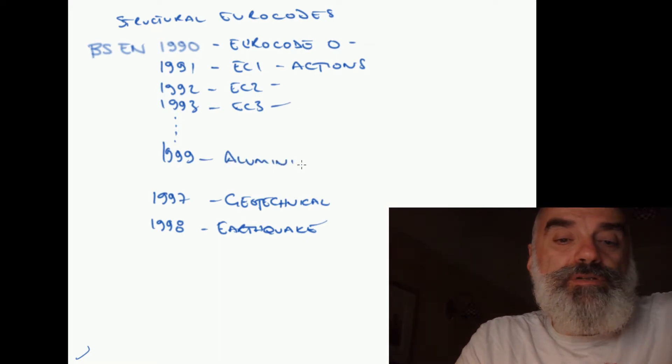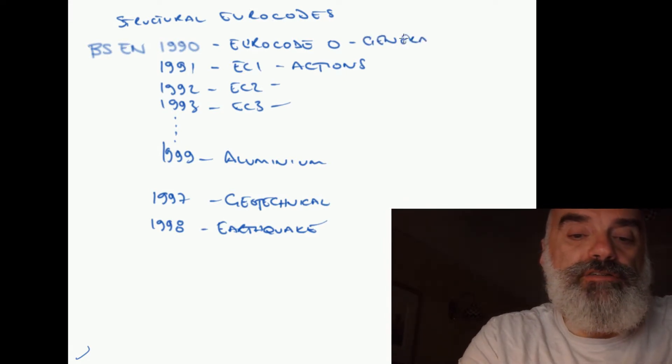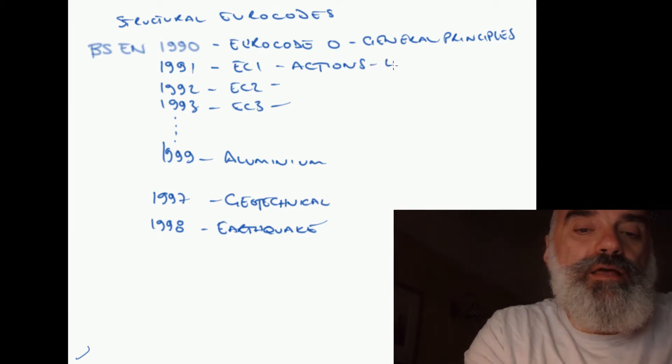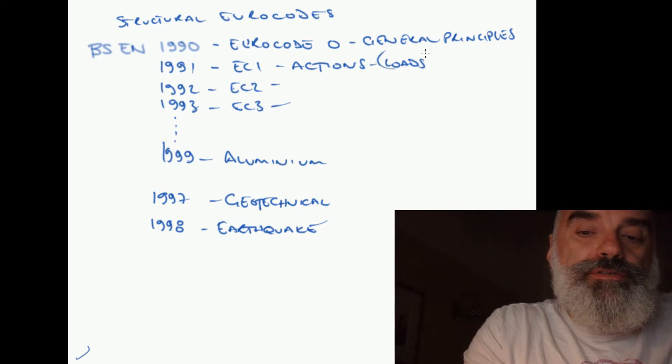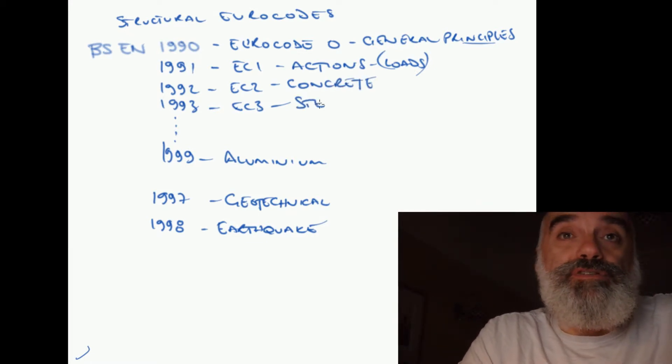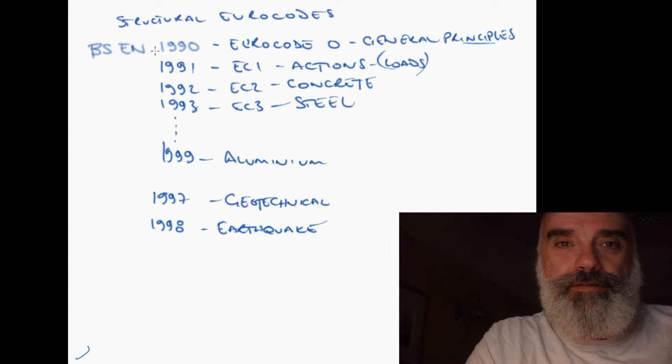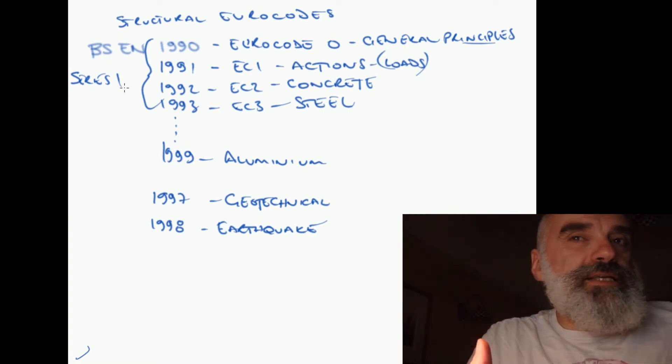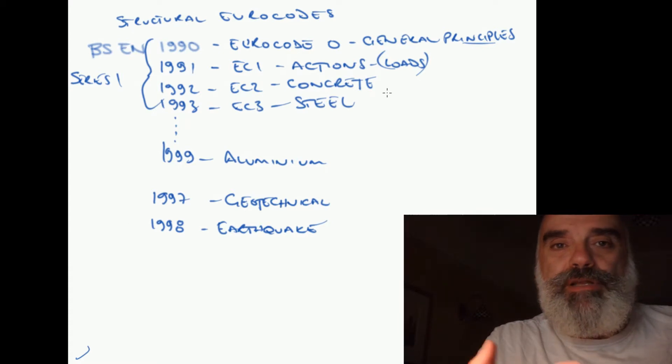We're going to look at the first few codes initially in this first series of videos: 1990 covering general principles, 1991 which covers actions on structures (an action is a load on a structure and we'll come on to talk about what that means), 1992 is the design of concrete structures, and 1993 is the design of steel structures. We'll concentrate on those initially as the structural engineer's materials of choice. But further codes in a future series of videos will deal with masonry design, timber design, aluminum design, and steel-concrete composite, so a mixture of steel and concrete acting together, typically where you have a concrete deck and steel beams acting compositely as a composite beam.